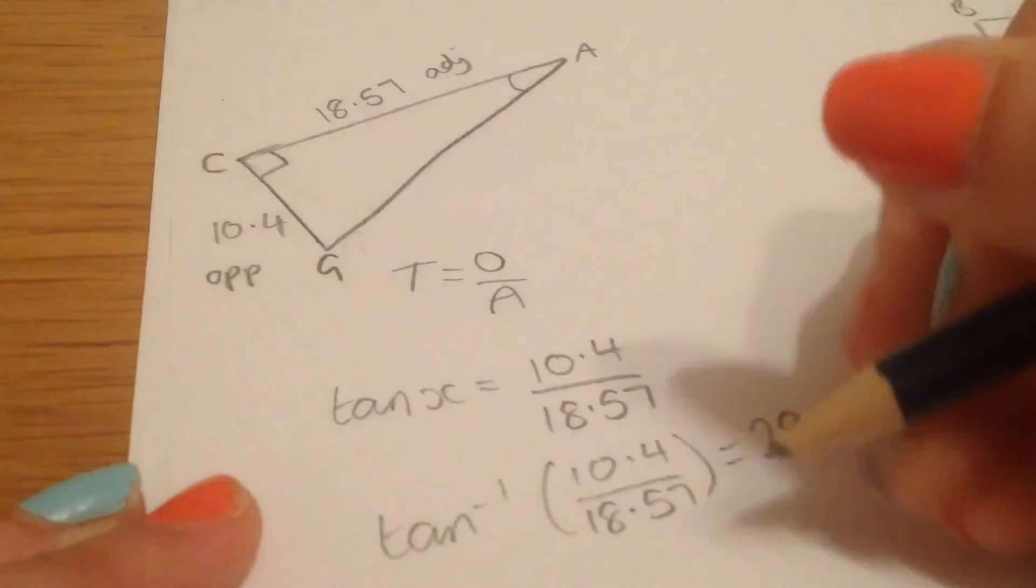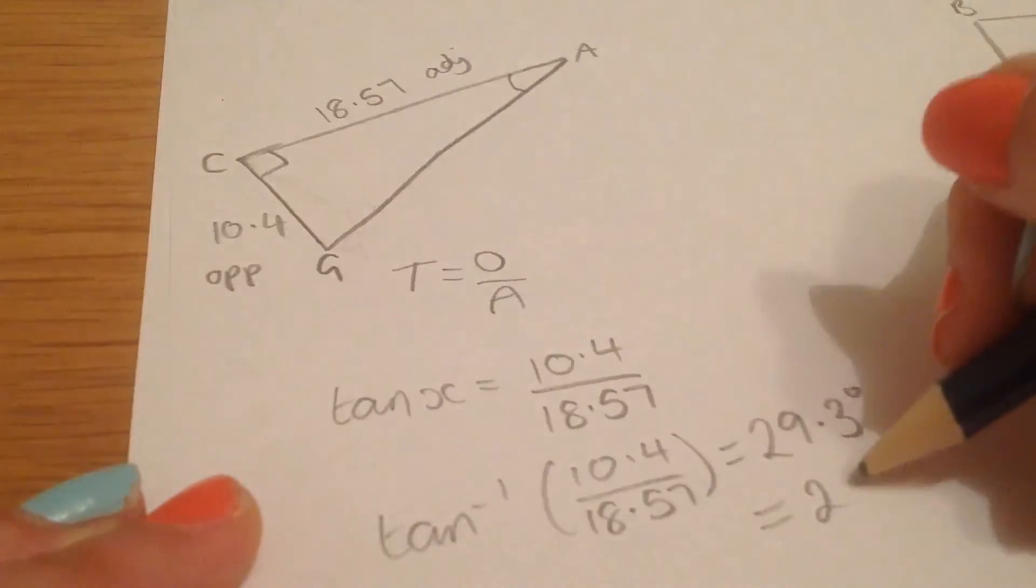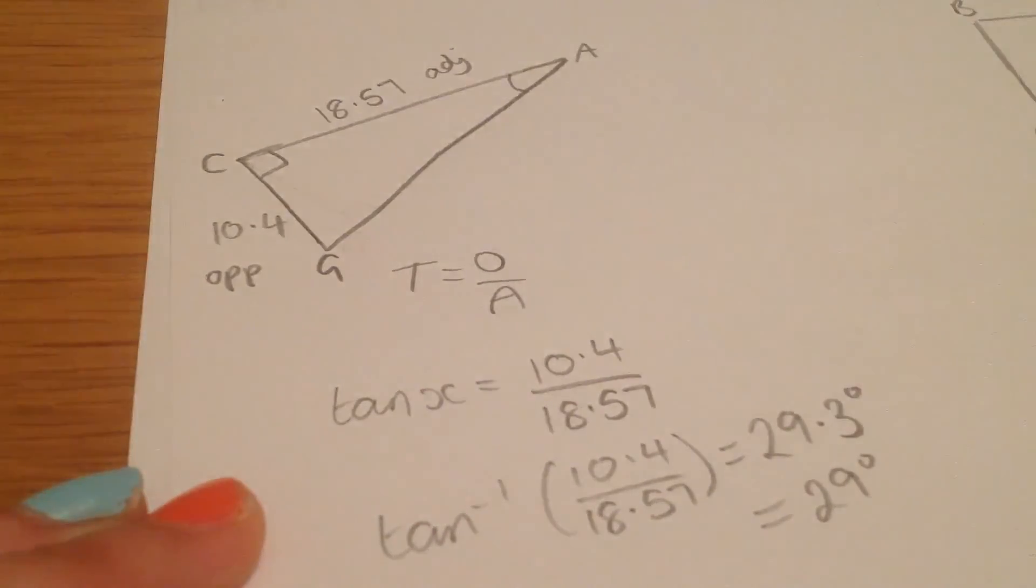It only asks for the angle to the nearest degree, so that's going to be 29 degrees.